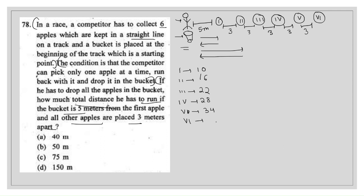For the sixth apple, the distance is 20 + 20 = 40 meters. Summing all distances: 10 + 16 + 22 + 28 + 34 + 40 = 150 meters. So the answer is 150 meters.